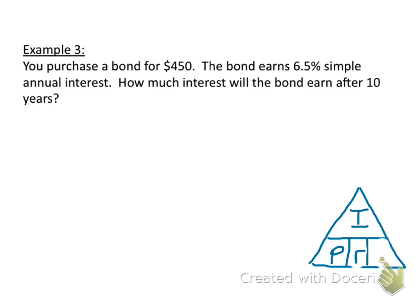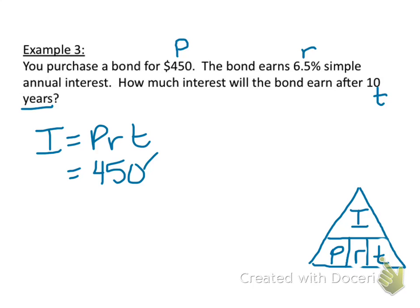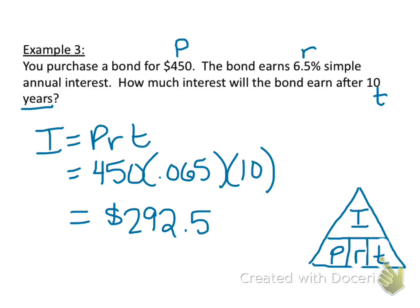We're going to examine these different scenarios. In this first one, you purchase a bond for $4.50 — that's our principal. The bond earns 6.5% simple annual interest — that's our rate. How much interest will the bond earn after 10 years? That's our time, and it's already in years. The one that's missing is interest, so multiply those three amounts. After multiplication, the interest earned is $292.50.